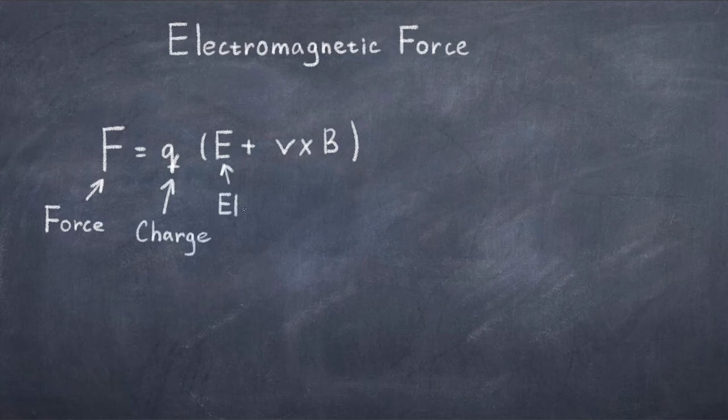Which is written as F is equal to q and in parenthesis E plus v cross B. Where again, F is the force, q is the charge, E is the electric field, v is the velocity, and B is the magnetic field.